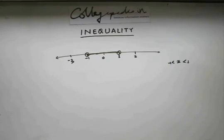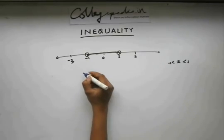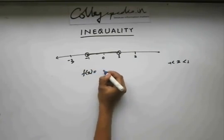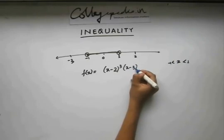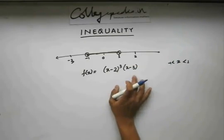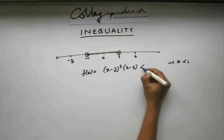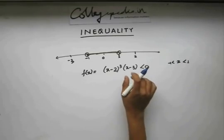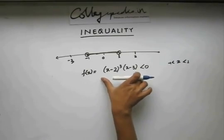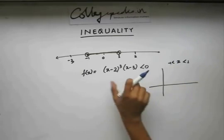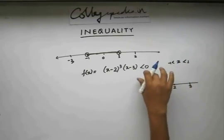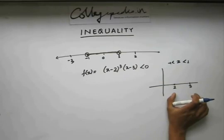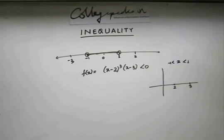Let's solve a question using the number line. Say I have been given a polynomial f(x) equals (x minus 2) to the power 3 times (2x minus 3), and I am asked to find the values of x for which this polynomial is less than 0. Using knowledge of polynomials, you know that a polynomial has roots — this polynomial has roots at 2 and 3. We are asked to find the range in which this polynomial is negative. Let's see how we can solve this using number lines.